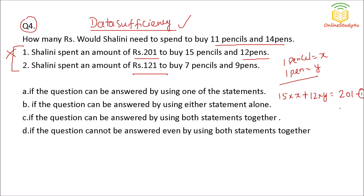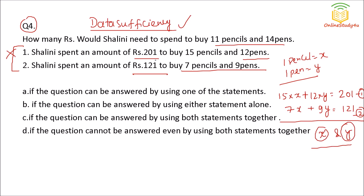Statement two: Salini spent 121 rupees and got 7 pencils and 9 pens — so 7x + 9y = 121. Now we have two equations and two unknowns, so we can easily find x and y. You do not need to actually calculate the values — you just need to recognize that both statements together are sufficient. So option C is the correct answer.